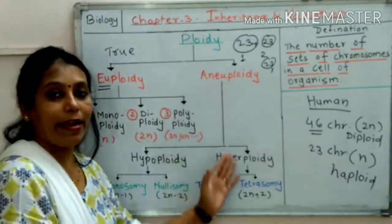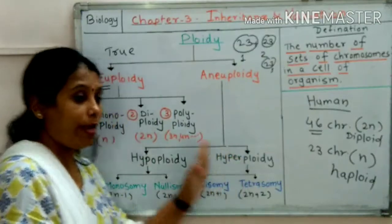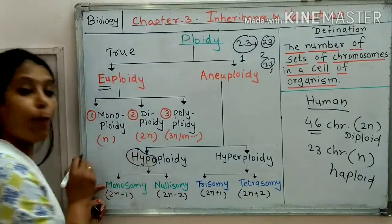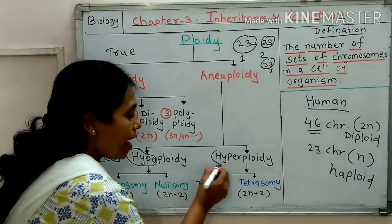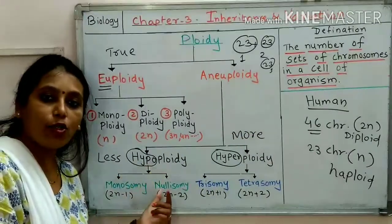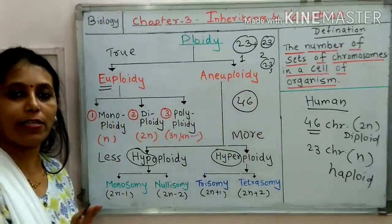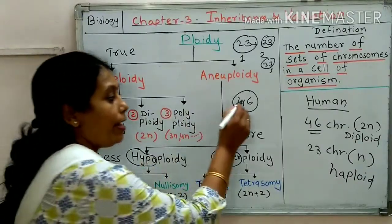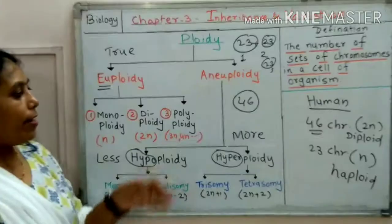Accordingly, aneuploidy is divided into hyperploidy and hypoploidy. Hypo means less — hypoploidy means less chromosomes than the normal set. Just remember, our normal chromosome number is 46. So if it is less than 46, then it is called hypoploidy. If it is more than 46, then it is called hyperploidy.